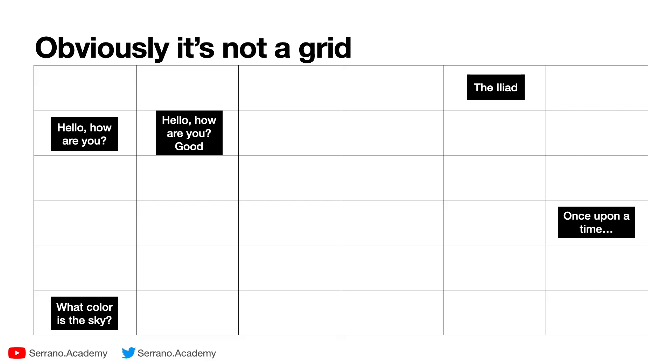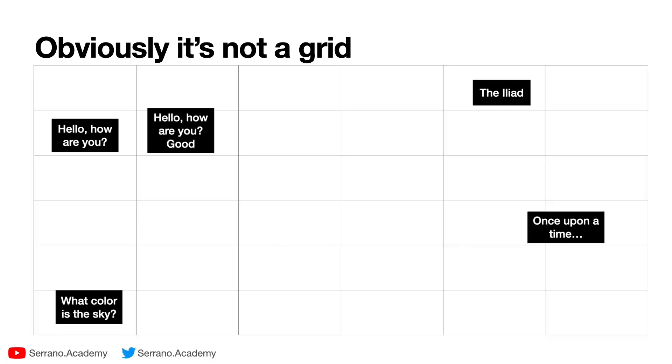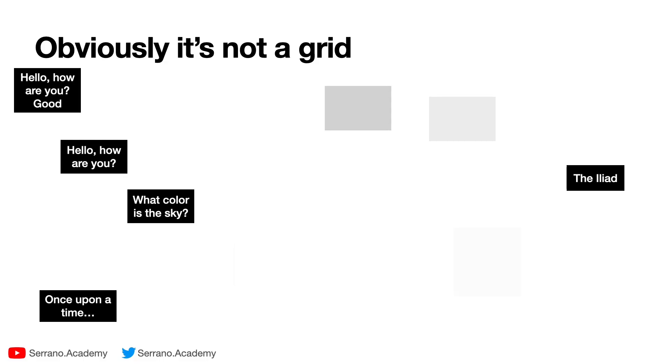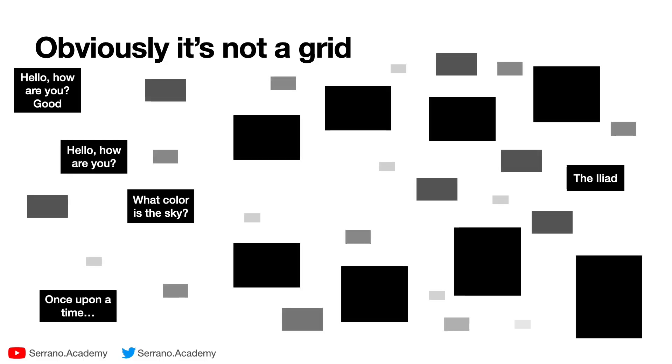It's actually a huge, very high-dimensional space where a lot of things appear. Each one of these boxes over here is a piece of text, and there are arrows between them corresponding to when we add a word at the end of each piece of text. So for example, over here, there's an arrow between 'hello, how are you?' and 'hello, how are you? good', meaning that if the prompt is 'hello, how are you?', it's very likely that the next word is going to be 'good'. So some of these arrows are thick for high probability and others are thin for low probability.